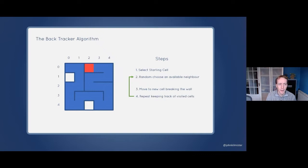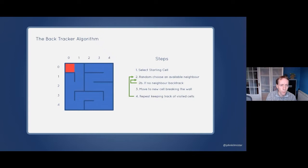We eventually get to a point where there are no neighbors we haven't visited before — that's where the backtracking element comes in. We go back to the previous cell and check if there are any unvisited neighbors, repeating until we find one. In larger mazes, that might be a whole area we've missed. Once we find one, we carve a path into it and backtrack out. We continue until we return to our starting cell and the maze is complete. Although the maze is complete, we don't have an entrance or exit yet. Since it's a perfect maze, we can pick any two exterior walls — we'll carve a hole in the western wall of 0,0 and the northern wall of 0,2.